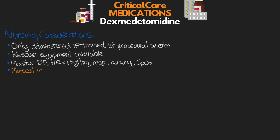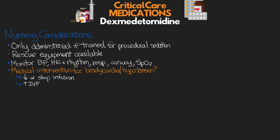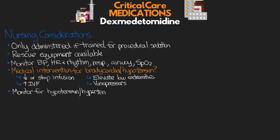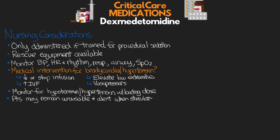If medical intervention is required for bradycardia or hypotension, look at either decreasing or stopping the infusion, increasing the rate of IV fluids being administered, elevating the lower extremities temporarily, or using vasopressor agents if we need to continue. Monitor for both transient hypertension and hypotension potentially during the loading dose infusion. Know that patients may remain arousable and alert when stimulated during the infusion. And patients may not require an artificial airway and mechanical ventilation during the infusion if they are able to maintain their own airway, as we won't typically see respiratory depression.